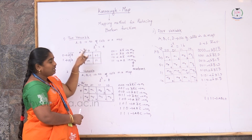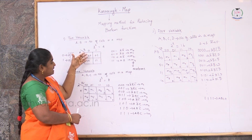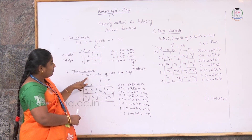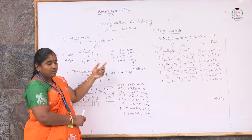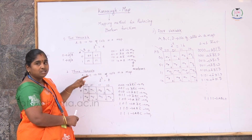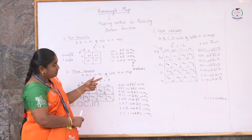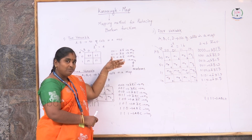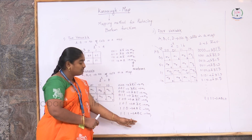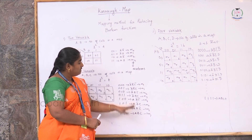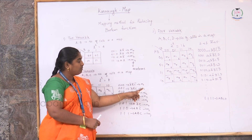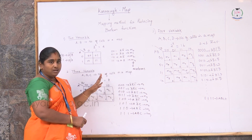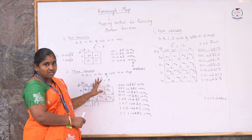Then, moving on to 3-variable mapping — with 3 variables A, B, and C — the total number of cells depends on the number of variables. The possible combinations range from A bar B bar C bar at minimum to A B C at maximum, and these terms are represented as M0 through M7. So you have 8 min terms total, and this is also a standard SOP function.